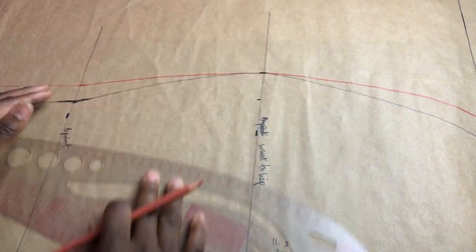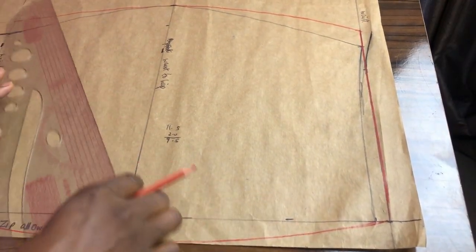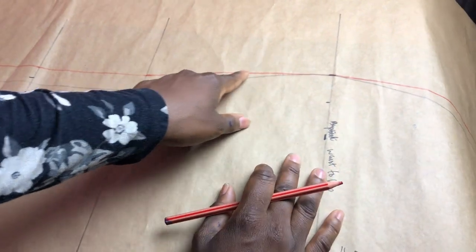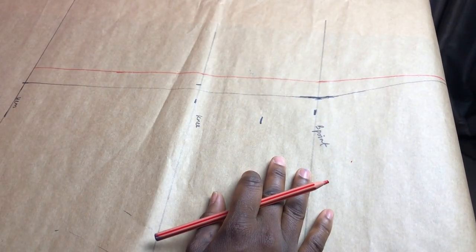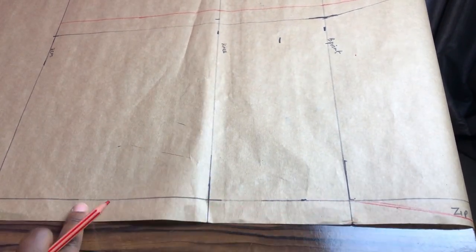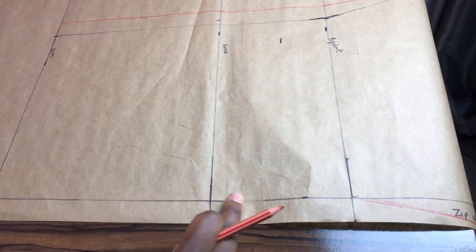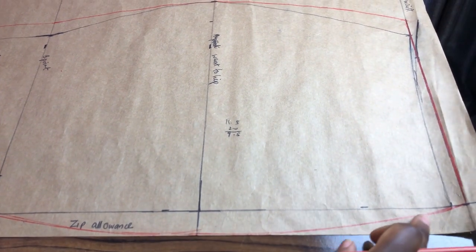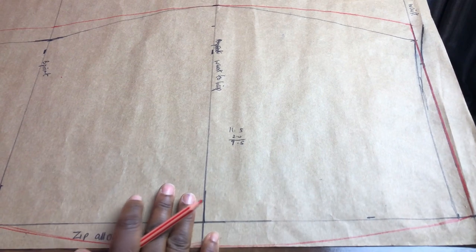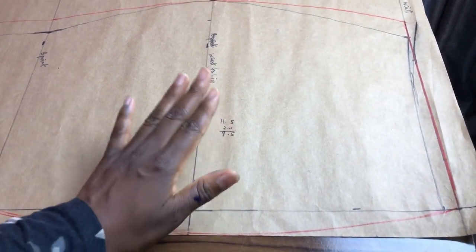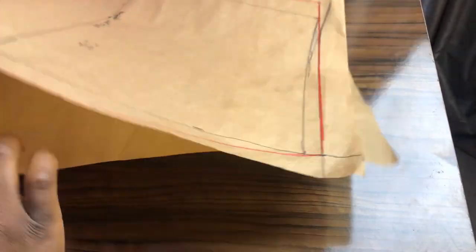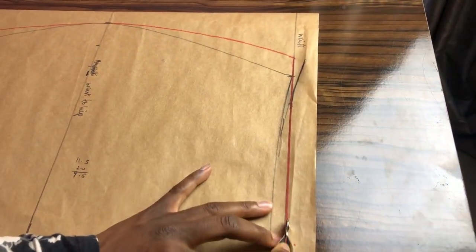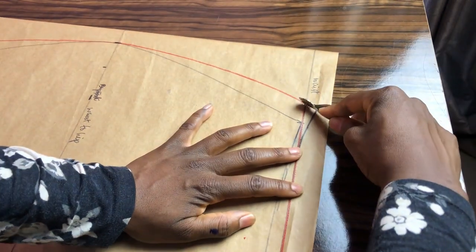So when you finish, trace the back pattern first. You trace from the waist like this, then to the side all the way to the hem. You won't be tracing the zip allowance with the back, so just trace as shown. At this point, if you are drafting on fabric, cut the back first, separate the pieces, and now cut the front. Because if you cut the front first, you would have eliminated the back with it.